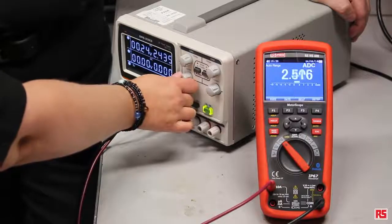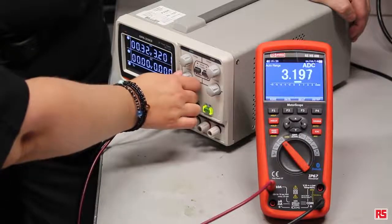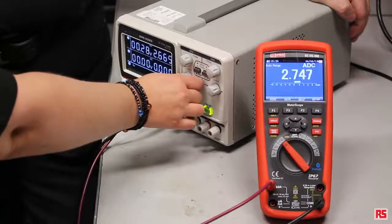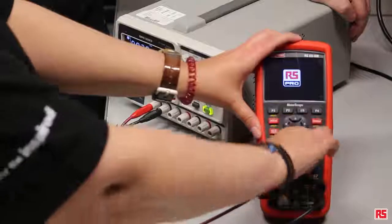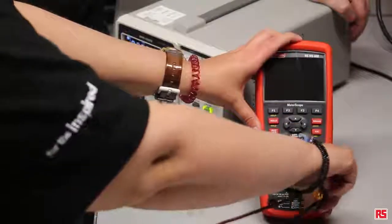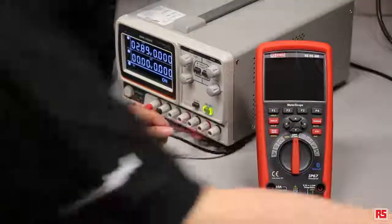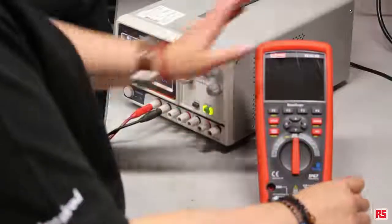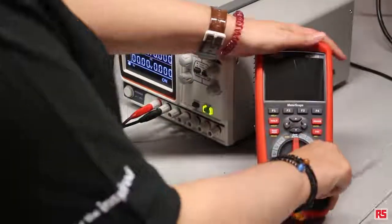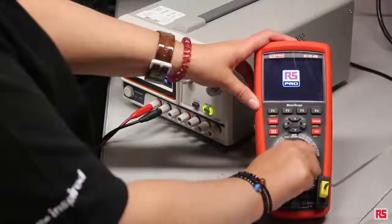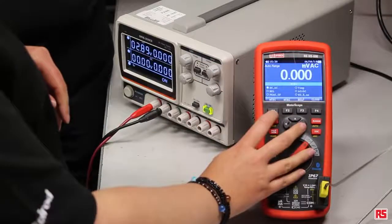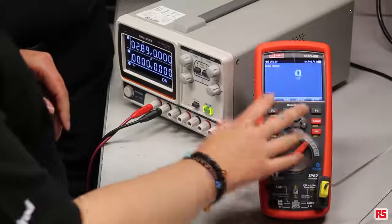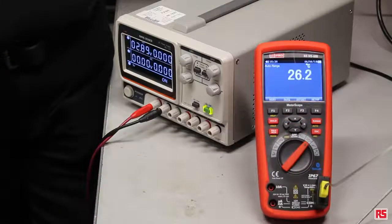From there we can actually now look at a temperature measurement. So if we switch it off and swap out these for the temperature probe and then switch it over to the temperature measurement. And there you go, you can see it's measuring the temperature.